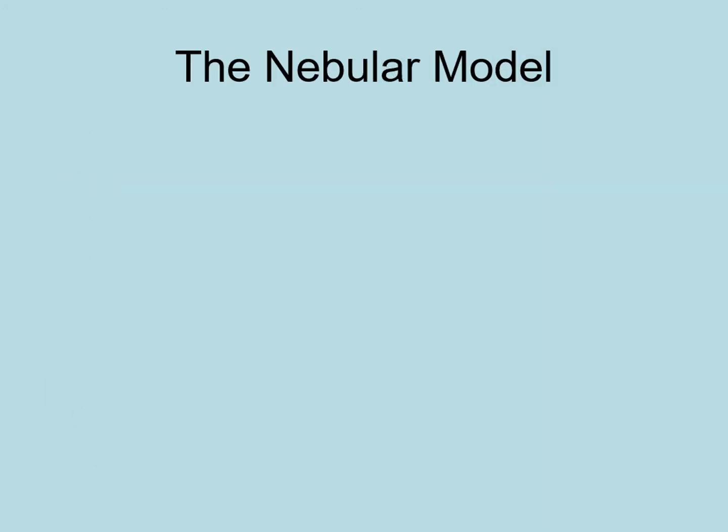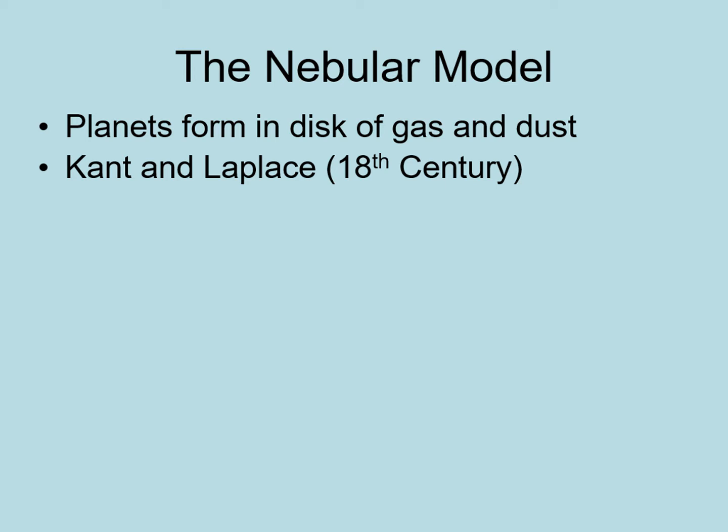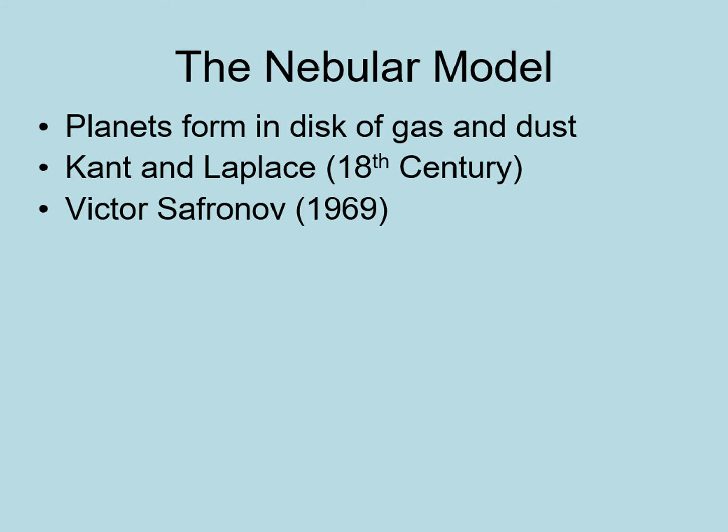In the late 1700s, natural philosophers started developing models to explain how the solar system could have formed consistent with Newton's laws of motion. One popular idea was that the planets formed from a disk of matter orbiting the sun — called the Nebular Hypothesis, or Nebular Model — proposed by Immanuel Kant and Pierre-Simon de Laplace. By the late 1960s, Viktor Safronov gave the model a much more rigorous mathematical footing, and it became the dominant model of solar system formation.